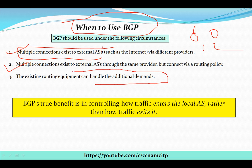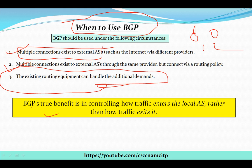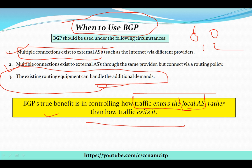The fourth circumstance is that the existing routing equipment can handle the additional demands, because BGP provides more facilities and has more features compared to other protocols. One important thing to remember: BGP's true benefit is in controlling how traffic enters the local autonomous system — how the traffic will enter — rather than how traffic exits. That is what will matter most, and we will be talking about all those things in detail in next videos.